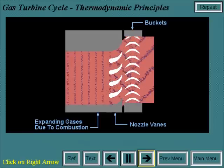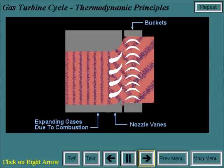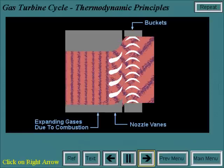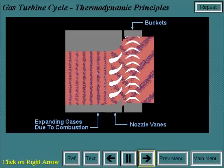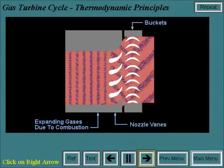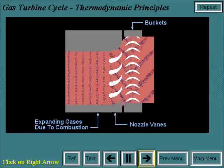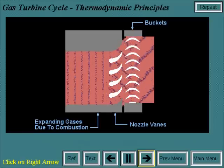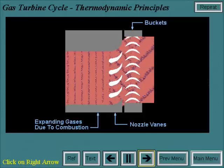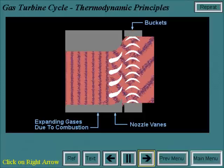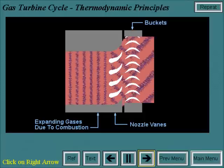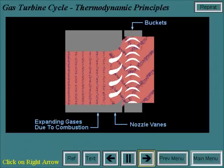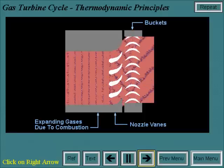The conversion of work in the turbine actually takes place in two steps. In the nozzle section of the turbine, the hot gases are expanded, and a portion of the thermal energy is converted into kinetic energy.